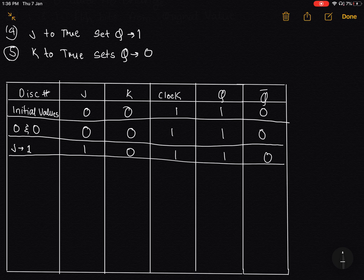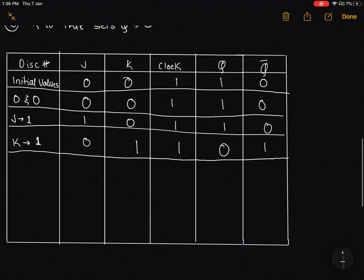But if in this case now, if we are setting K to 1, now in this case Q will change to 0 because we are clearing the value, right? K stands for clear and K is true, so we are clearing the value and Q becomes 0. Q complement is always the opposite of Q, so it becomes 1.